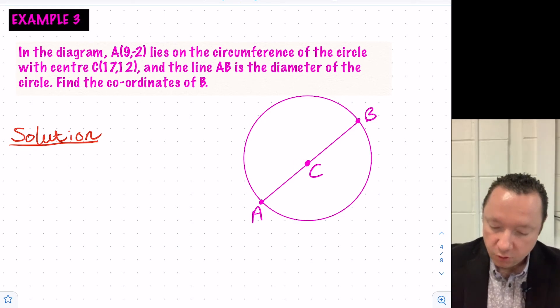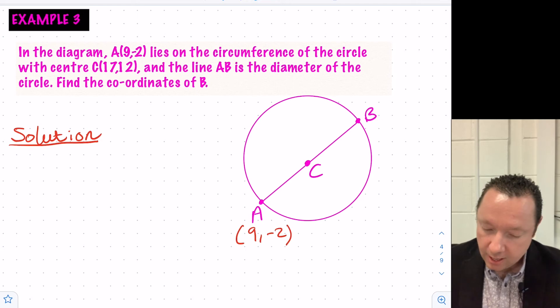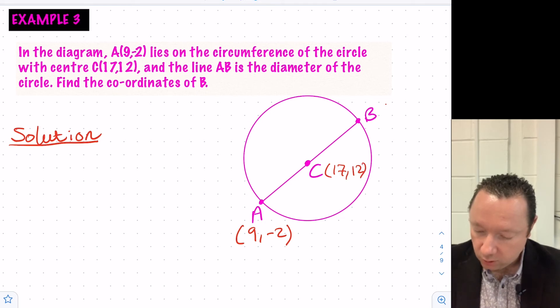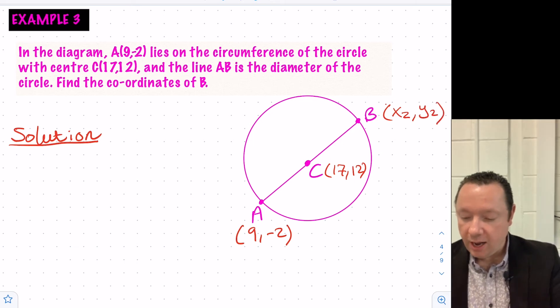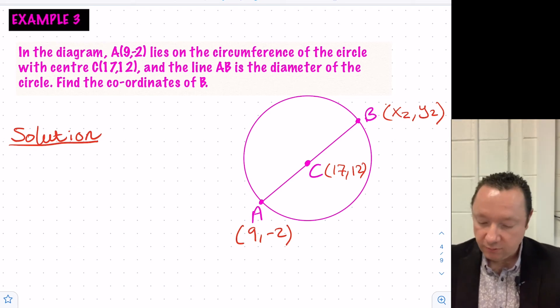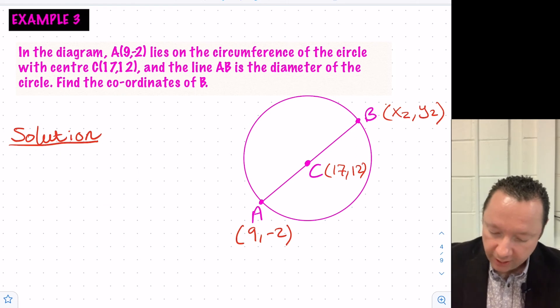So let's just take a few notes here. A is 9 minus 2, so I'll write that down there. And C is 17, 12, which I can write here. And I want to know the coordinates of this, let's call that x2, y2. So we know that if we add 9 and x2 and divide by 2, we'll get 17. So we can work backwards to get our solution.